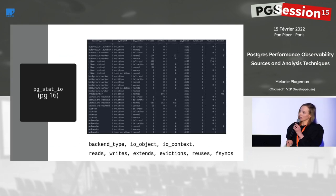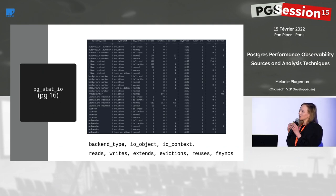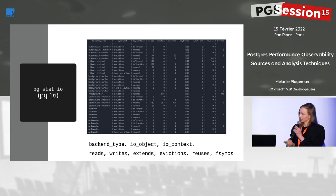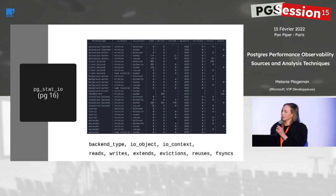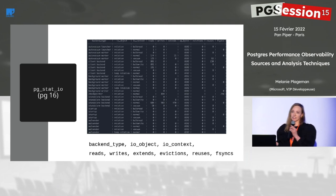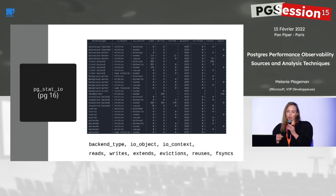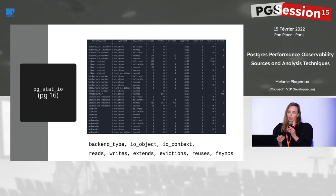This is what pgstat.io looks like. You can see a lot of zeros because this was from a freshly initialized database. You have different columns: backend type, IO object — which right now includes temp relation and relation — IO context, where you can see bulk read, bulk write, normal, and vacuum. Then you have the IO operations: reads, writes, and extends. We also have evictions, reuses, and fsyncs.